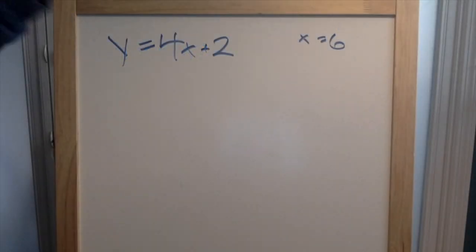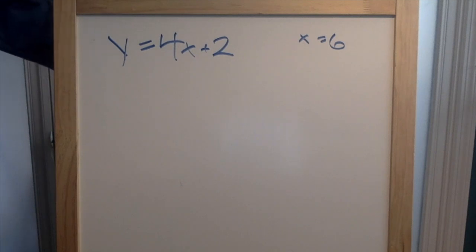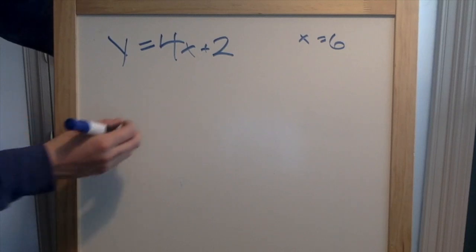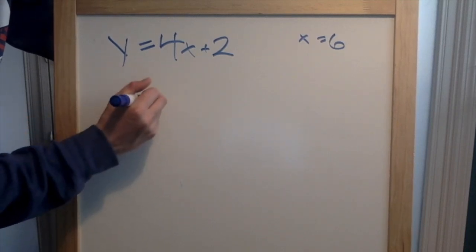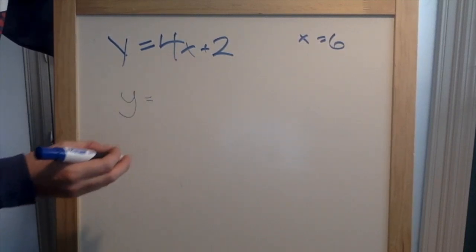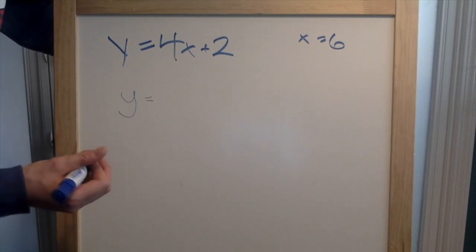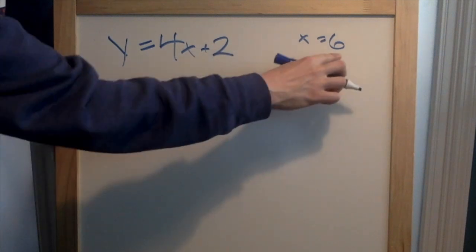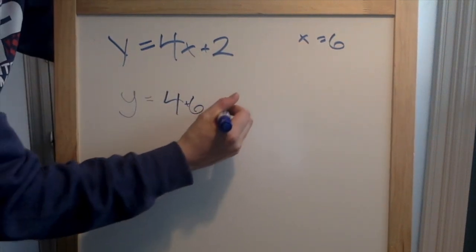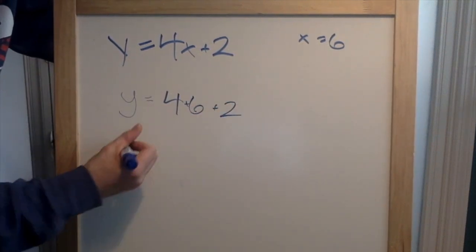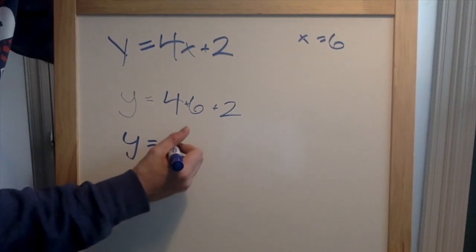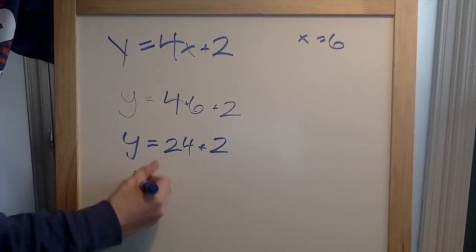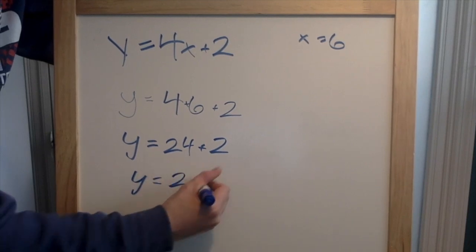Our next problem says Y equals four X plus two, when X equals six. Y equals four X — remember, when a number and a letter touch we mean multiply. So we're going to do four times X, which is six, plus two. That means Y equals twenty-four plus two, which means Y equals twenty-six.